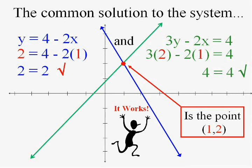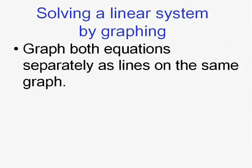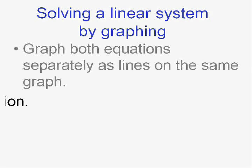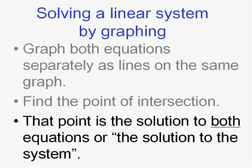So to solve a linear system by graphing, we're going to just graph both equations separately as lines on the same graph and then find the point of intersection and that point is the solution to the system.